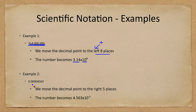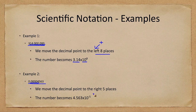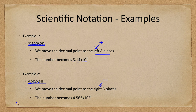Let's look at an example for a small number. Here the small number is 0.000004563. We move the decimal point five places to the right. Because we moved it to the right, the exponent is going to be negative. We write the remaining number as 4.563 times 10 to the negative fifth power. That's how we can convert numbers.